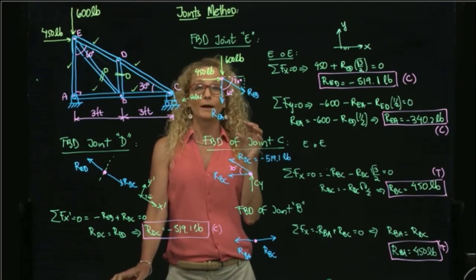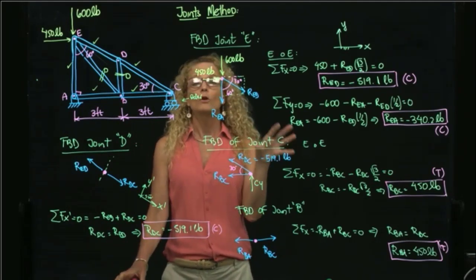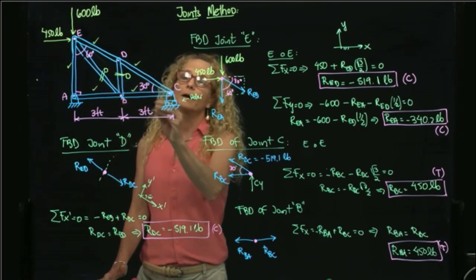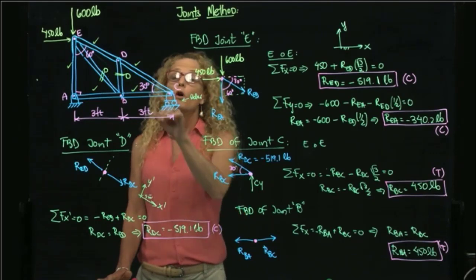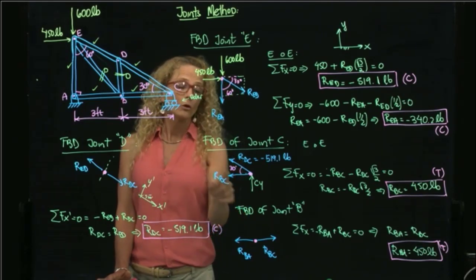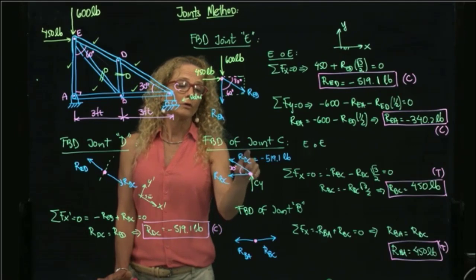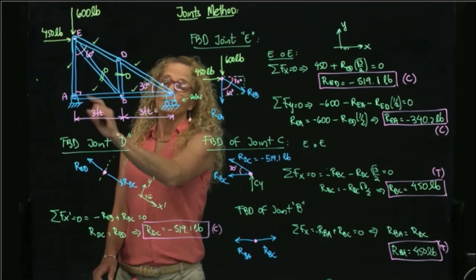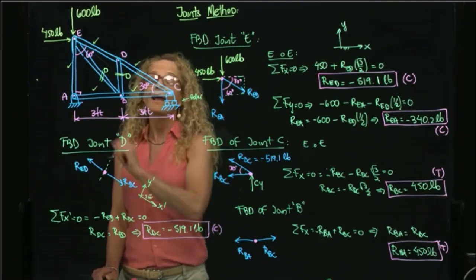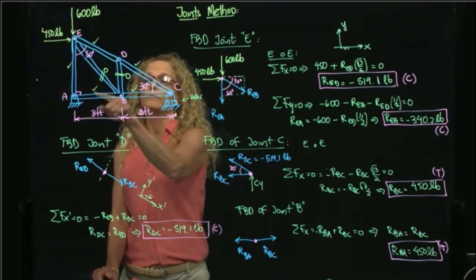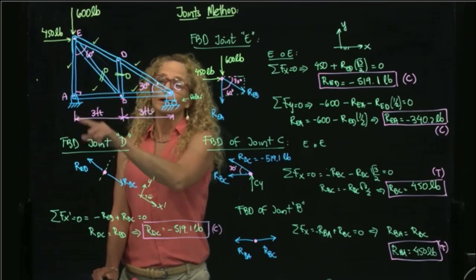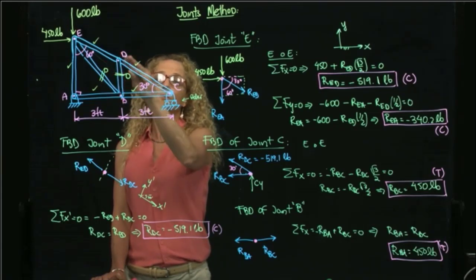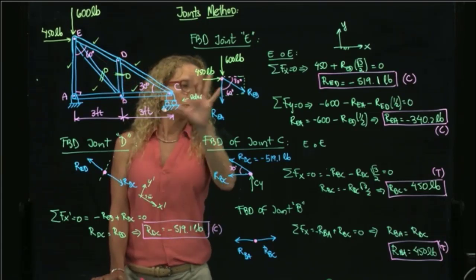If we would like to find the external reactions, we could treat the truss as a rigid body, or since we already found all the members, we could add forces in y at joint C to find Cy, then do the free body diagram of joint A and add forces in x and y to find the remaining reactions. But in this case, we are concentrating only on the member forces, which we have already found.